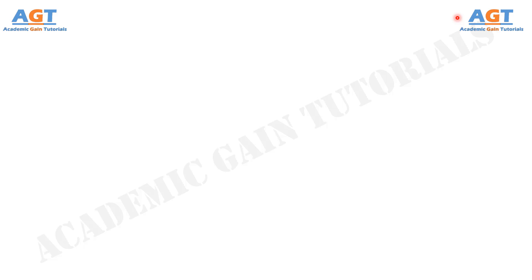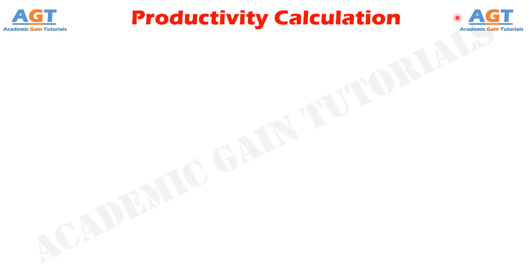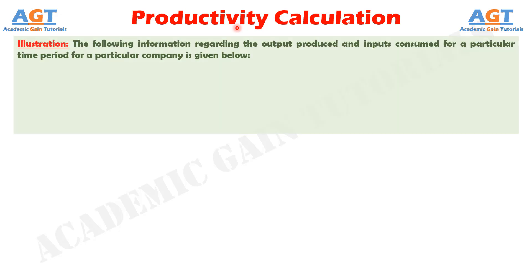In this video we will look into a mathematical problem example on how to calculate the different productivity values based on a given range of information. For our problem statement, the following information regarding the output produced and inputs consumed for a particular time period for a particular company is given.